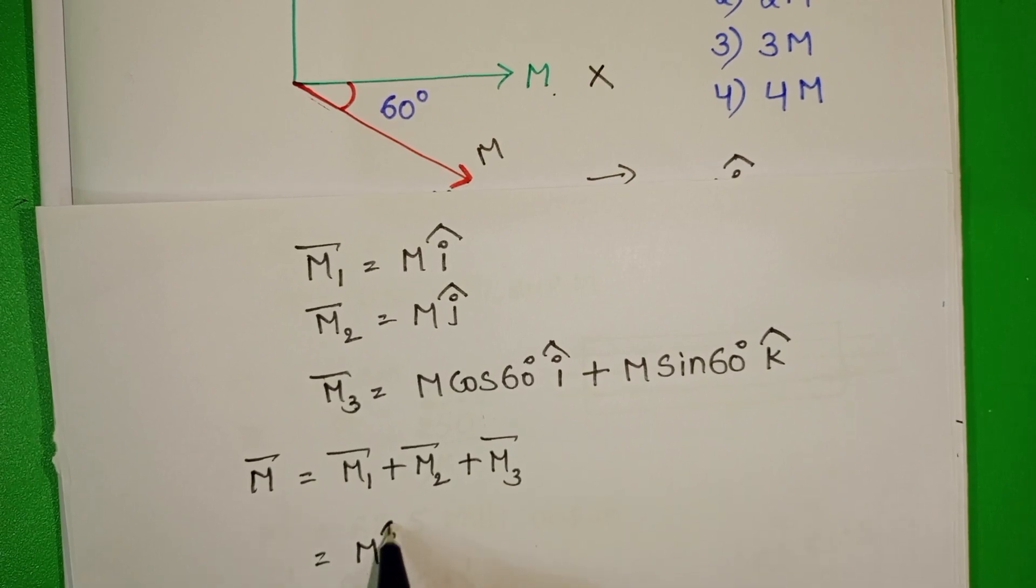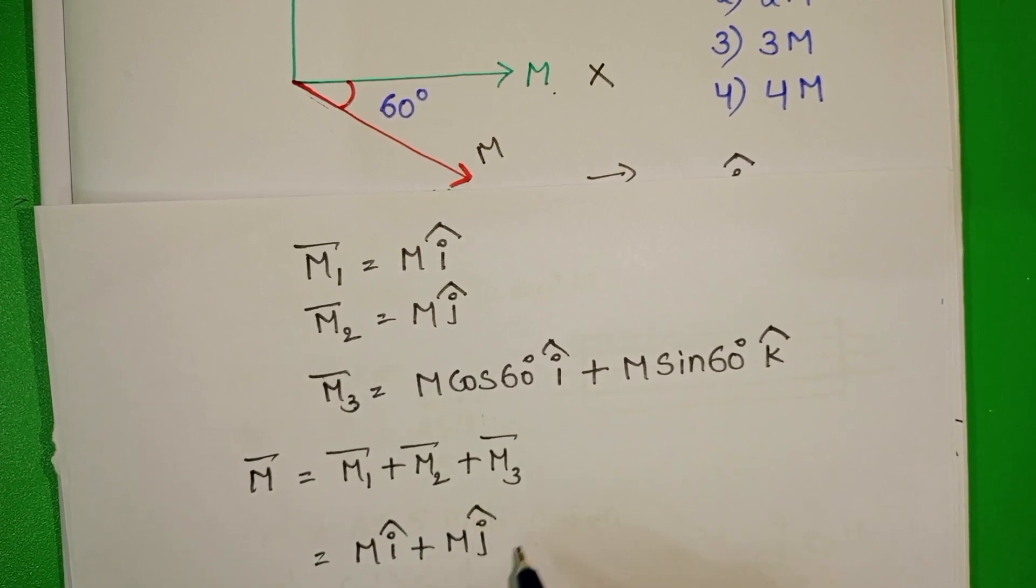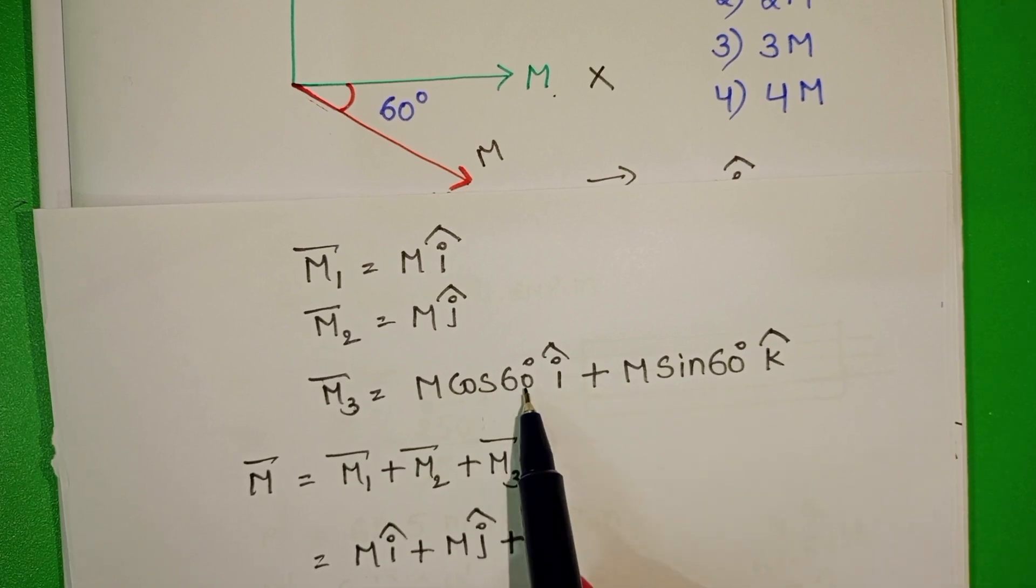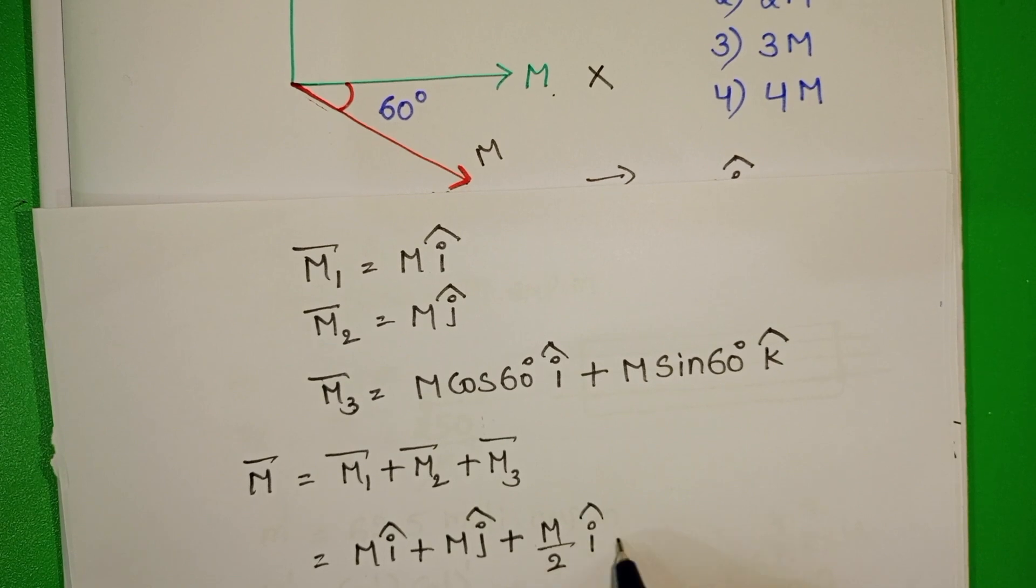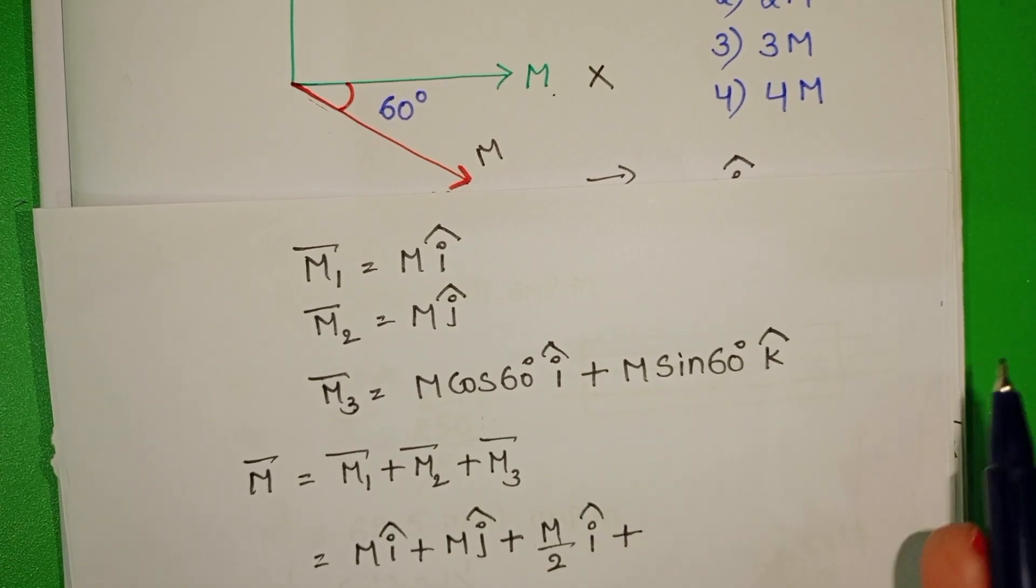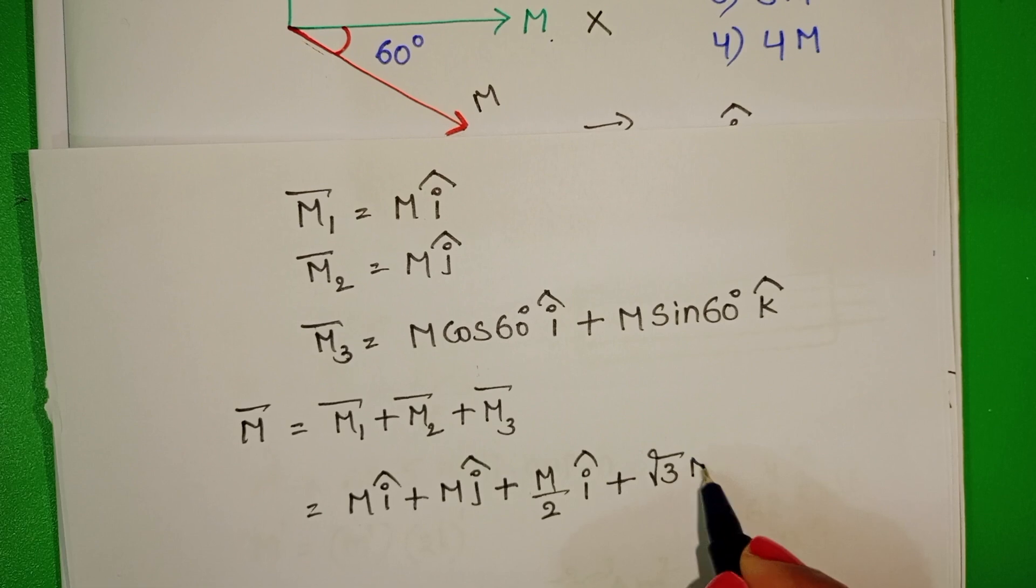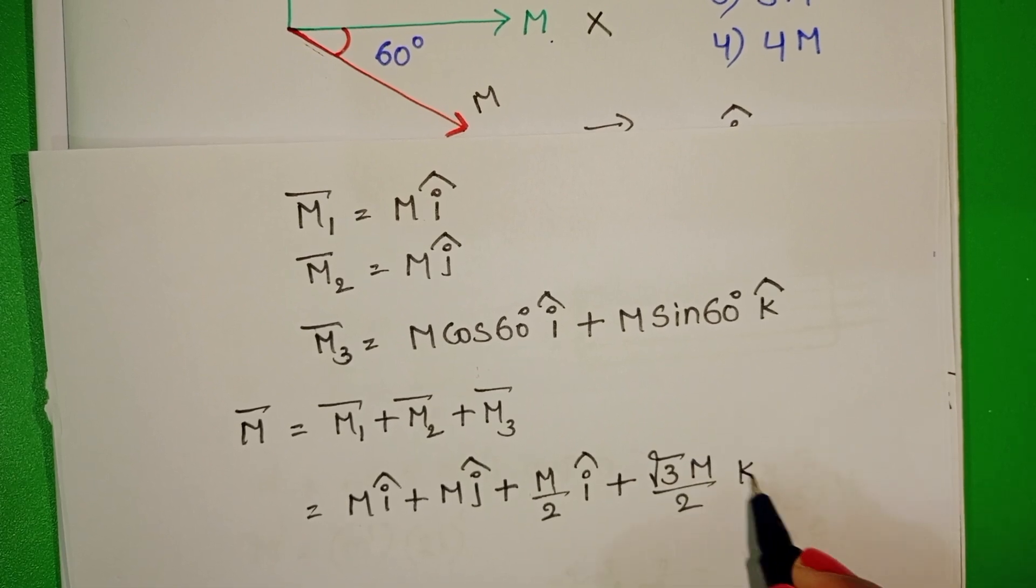M i cap plus M j cap plus cos 60, which is 1 by 2, so M by 2 i cap plus sin 60, which is root 3 by 2, so root 3 M by 2 k cap.